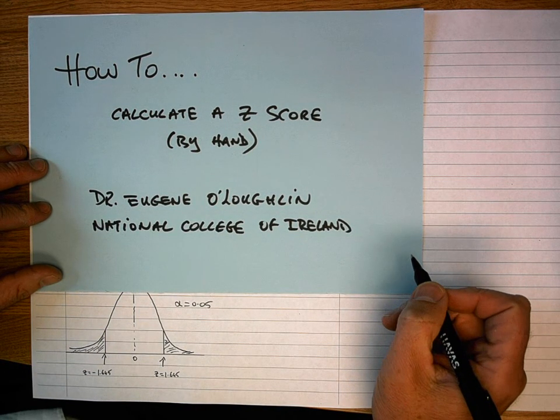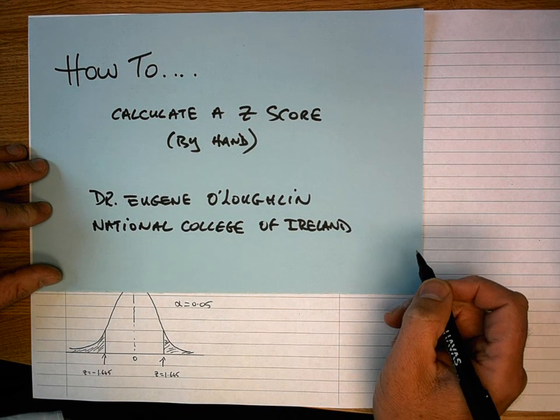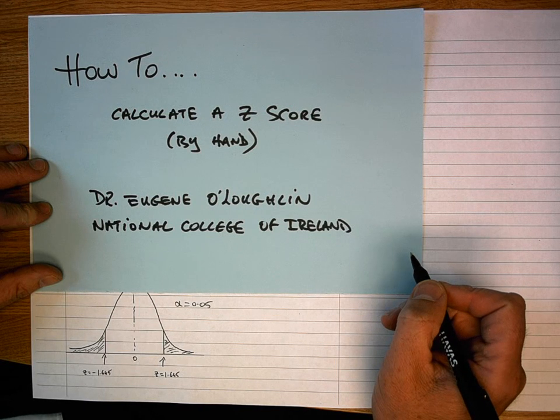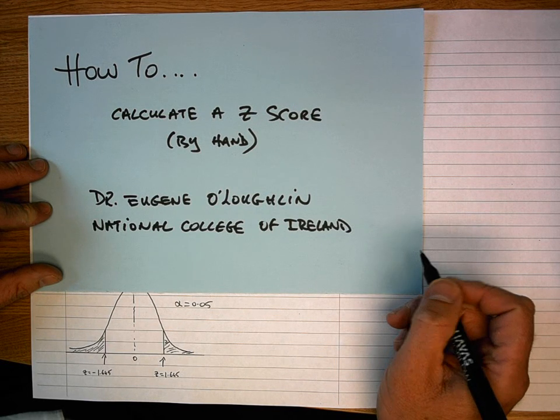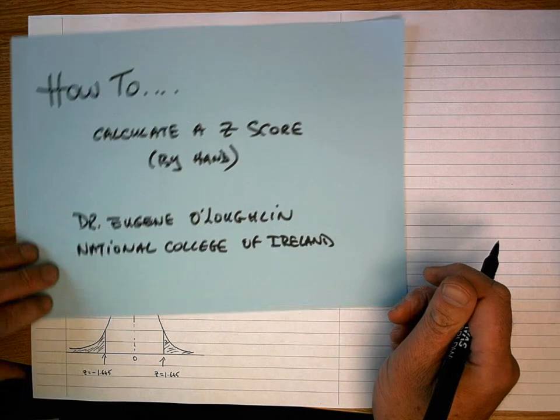Hi everybody, this is Eugene O'Loughlin, Lecturer in Computing at the National College of Ireland, and welcome to my series of short how-to videos. In this video, we're going to learn how to calculate a Z-score by hand.